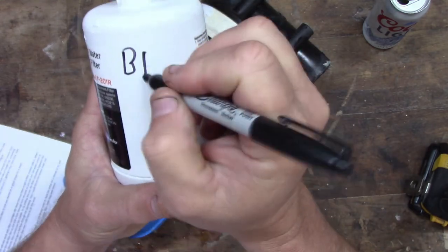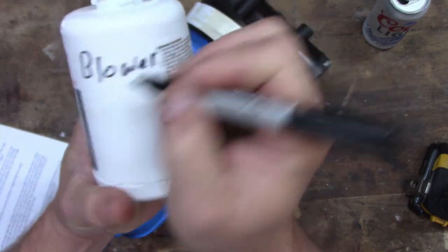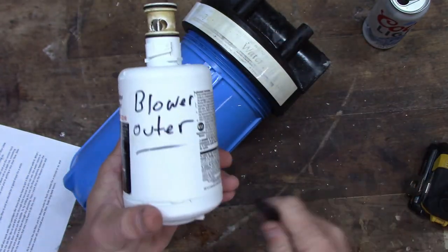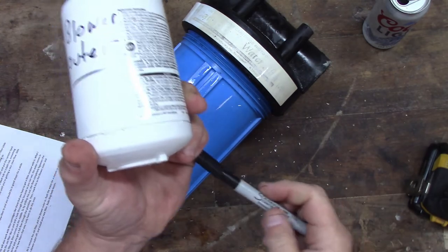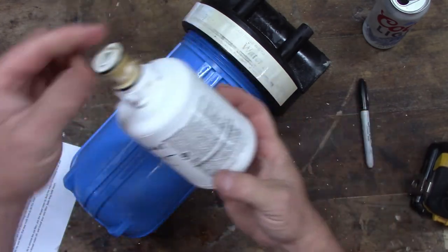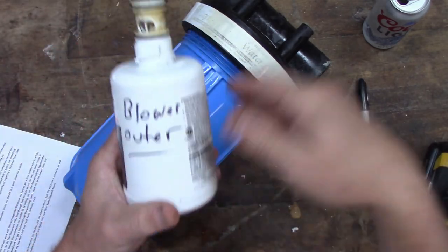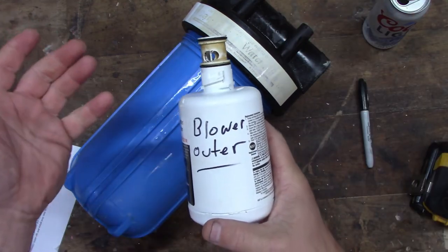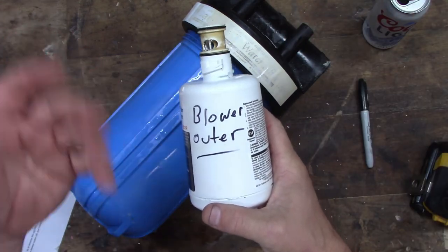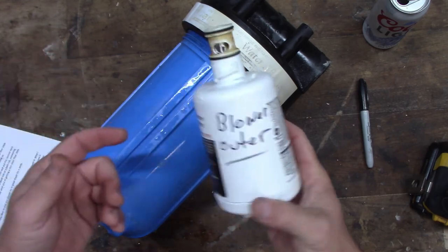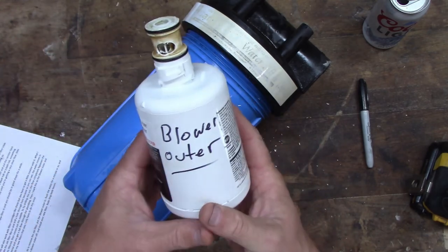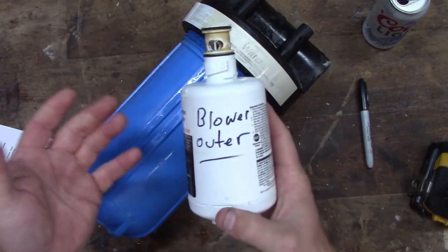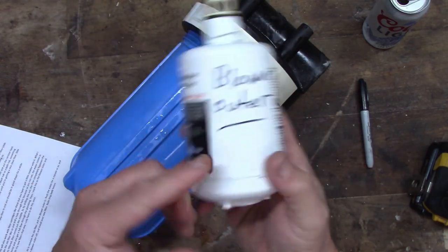So you take your old filter out, put this one in there, and then flush it out. Turn on your water, let it flush out till it's coming out nice and clean with good pressure. Then put your new filter in, take the blowout filter off, put your new filter in, and then you're in good shape.